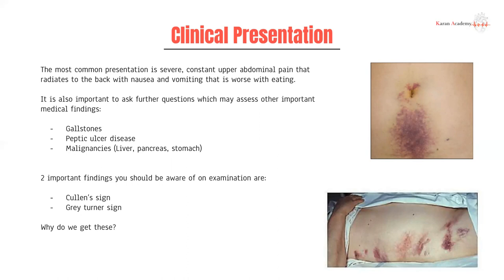Peptic ulcer disease is a relevant differential because medications like NSAIDs and steroids can cause both, and peptic ulcer disease can also present with severe, constant upper abdominal pain. Malignancies like liver, pancreas, and stomach can again present with upper abdominal pain. Pancreatic cancers can also compress the pancreatic duct and cause that backflow and inflammation we talked about.